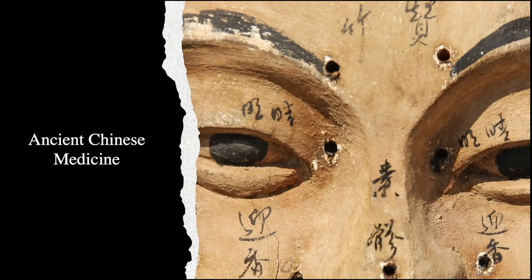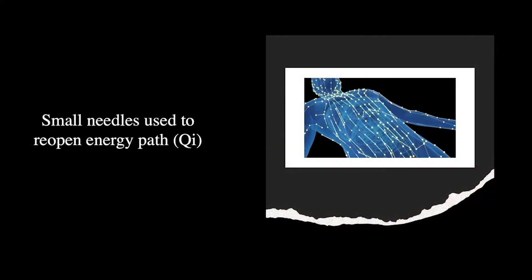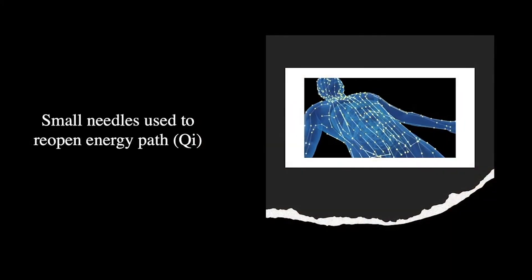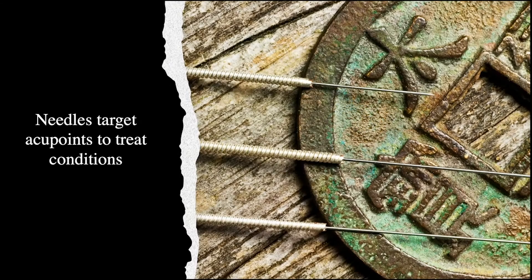Acupuncture is an ancient Chinese medical practice. From this perspective, acupuncture was used as a way to reopen a bodily energy path called qi. This was done by using very small needles, similar to the width of a human hair.